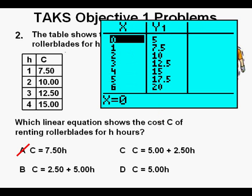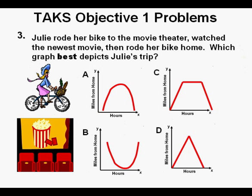And we see that all the output values match, so C is our correct answer. Problem 3: Julie rode her bike to the movie theater, watched the newest movie, then rode her bike home. Which graph best depicts Julie's trip? Since the y-axis represents miles from home and the x-axis represents hours...